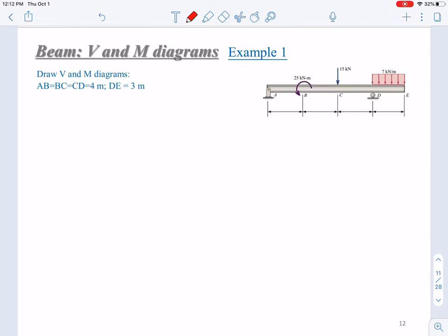Now here, we already determined that Ay is 4.5 kilonewtons and Dy is 31.5. So based on these two reaction forces and the external loadings, we can draw the V diagram.